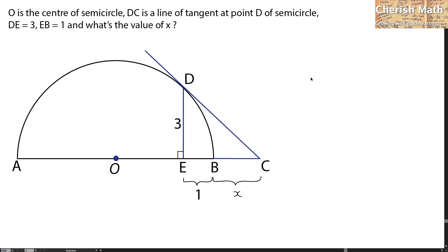Hi from Challenge Math. This is the problem here for today. O is the center of semicircle. DC is a line of tangent at point D of semicircle. DE equals 3, EB equals 1, and what's the value of x?